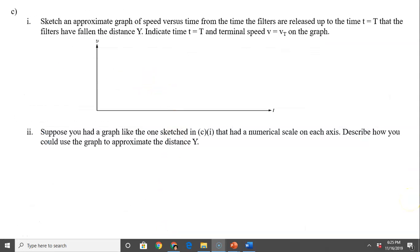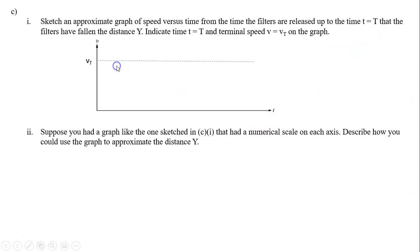Next part, sketch an appropriate graph of speed versus time from the time the filters are released up to the time t equals T, that the filters have fallen the distance y. Indicate the time t equals T and the terminal velocity v equals vt on the graph. So we know vt is the highest value the filters can reach, because that is the terminal velocity, so you need to have a horizontal line, and your graph should be a curved line approaching vt. As it approaches vt, that is your time T.